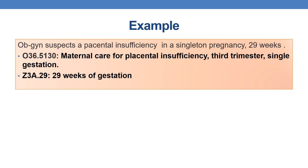Example 3: An OB-GYN suspects placental insufficiency in a singleton pregnancy at 29 weeks. The code is O36.5130 — maternal care for placental insufficiency, third trimester, single gestation. The sixth character 3 indicates third trimester (28 weeks until delivery), and the seventh character 0 indicates single gestation. Additionally, assign Z3A.29 to indicate 29 weeks of gestation.